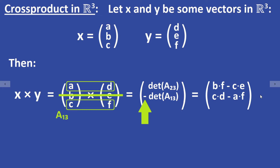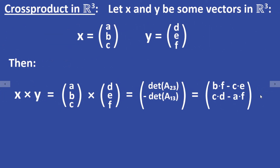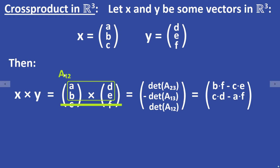For the last entry of the cross product, you cross out the last row. The last entry is equal to the determinant of this 2×2 submatrix, which means it is equal to A times E minus B times D.